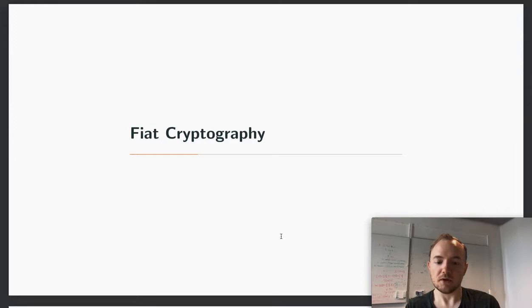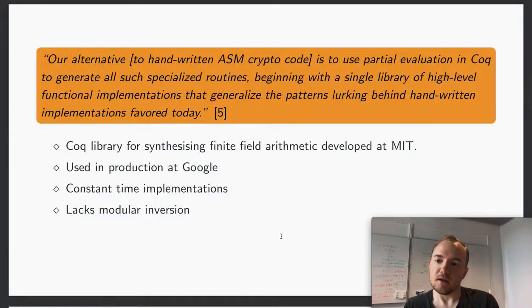So Fiat cryptography, what is that? Fiat is a code library for synthesizing finite field arithmetic developed at MIT. In their own words, it's an alternative to the handwritten assembly code that you find in the wild today, and it's a way to get rid of those bugs that arise from difficult to write and difficult to audit assembly code. It's used in production at Google and generates constant time implementations.